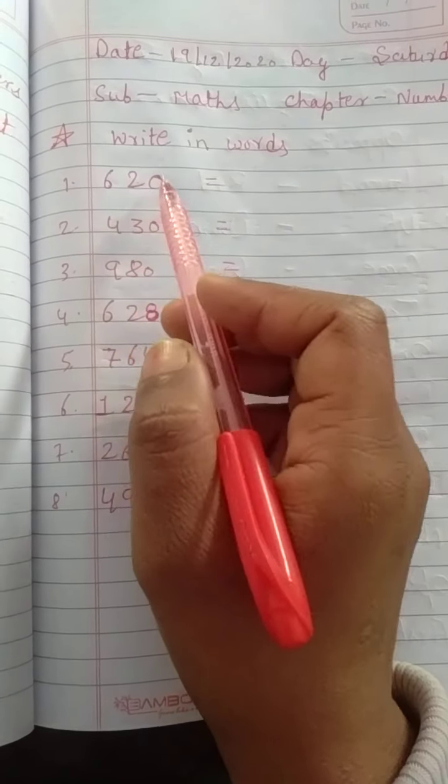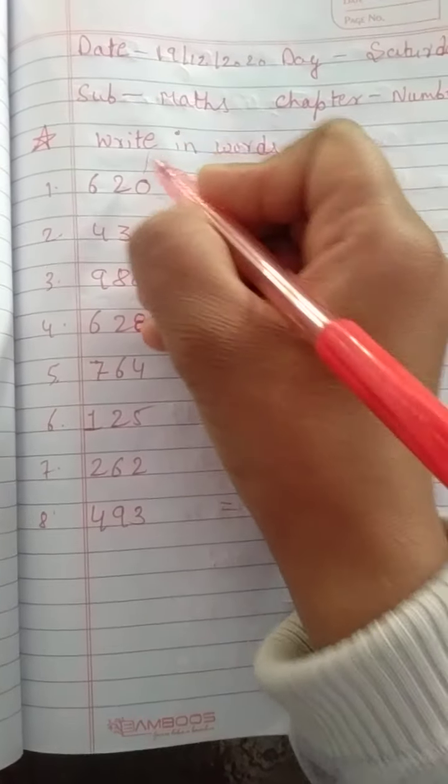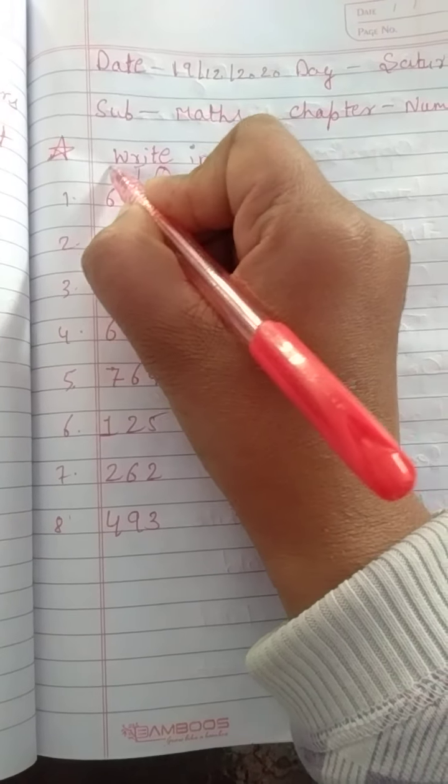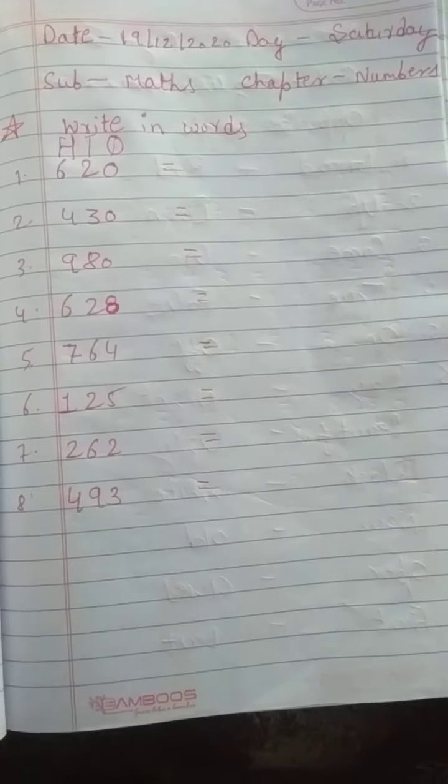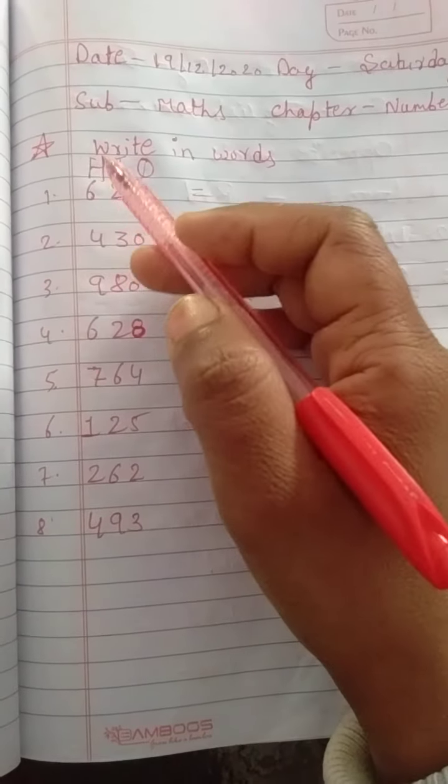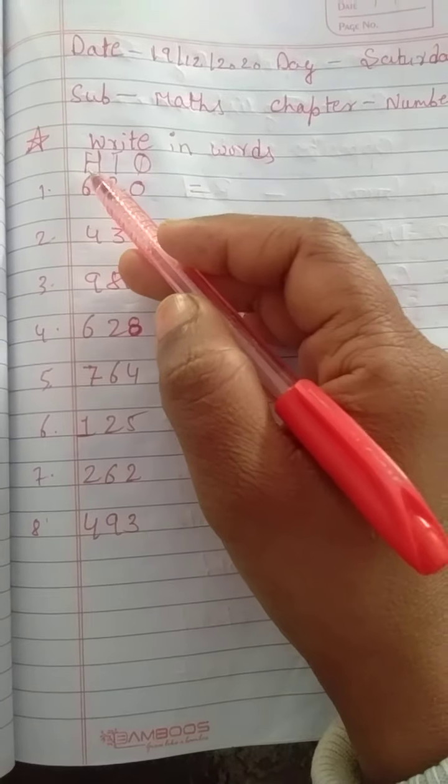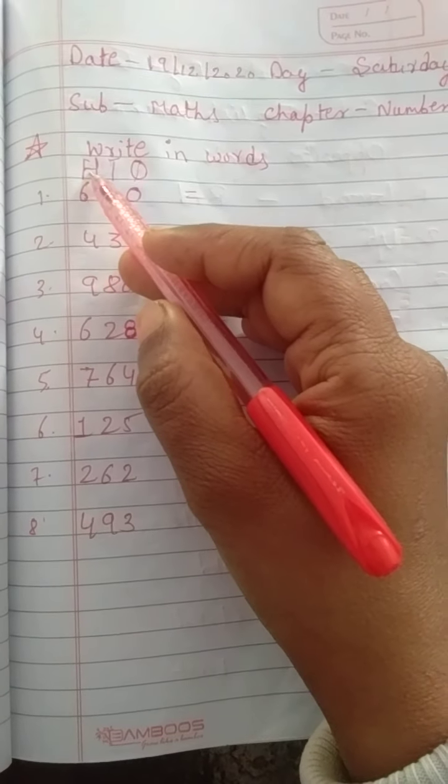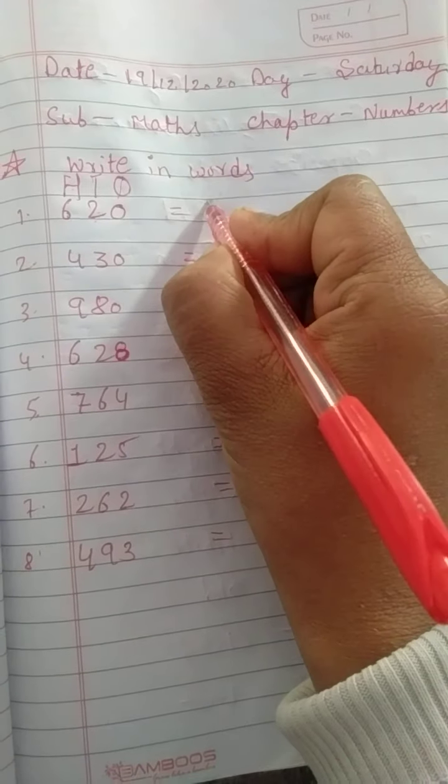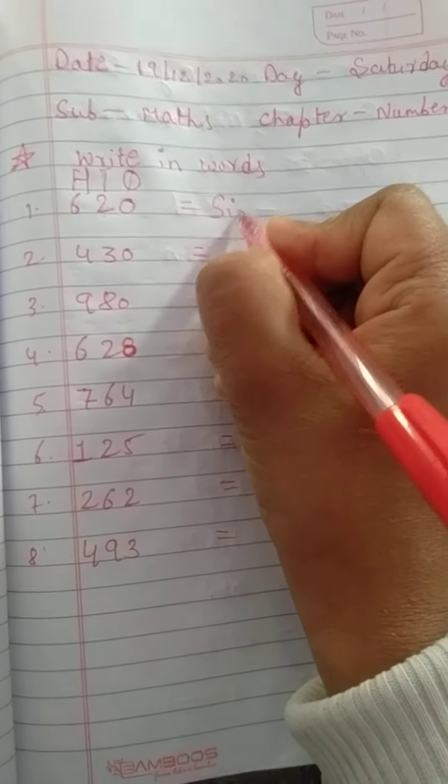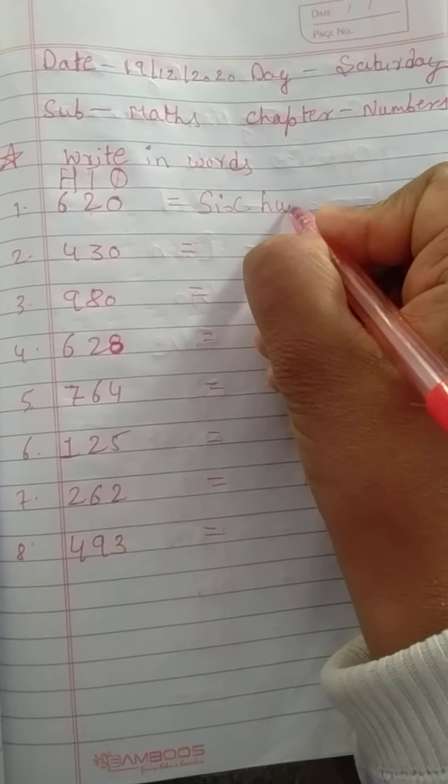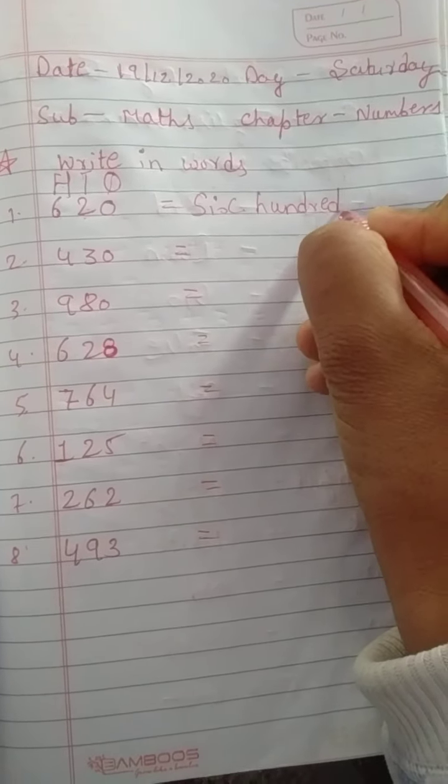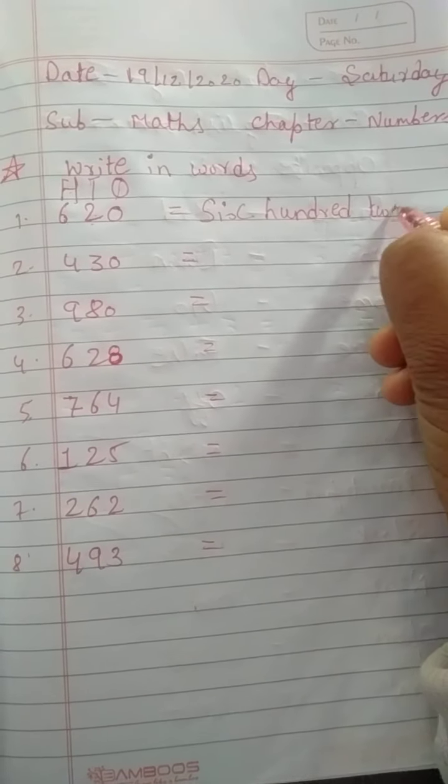6 2 0. So 0 is on 1's 10's 100. Okay. 1's 10's 100. So 6 2 0. So 6 hundred 20.